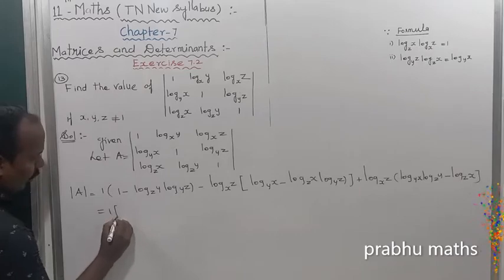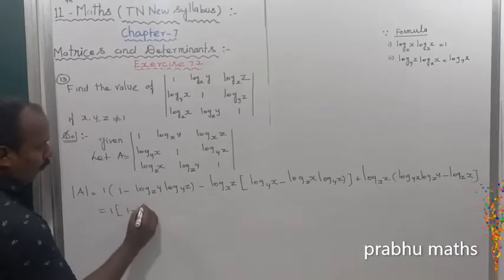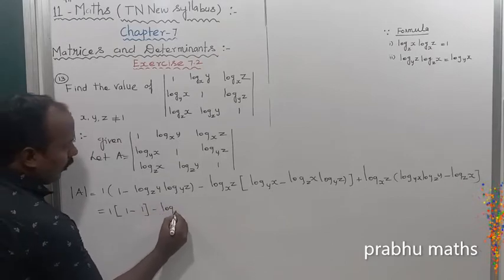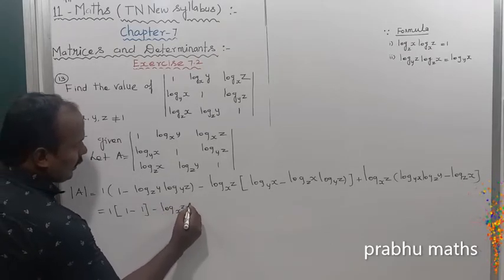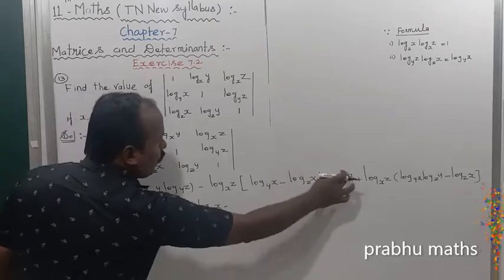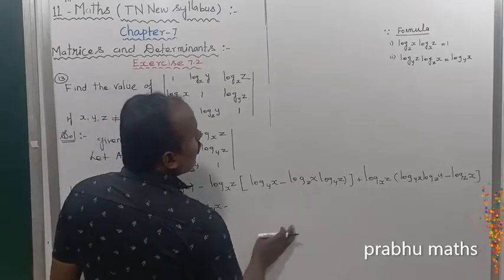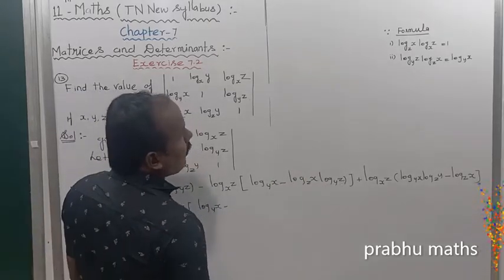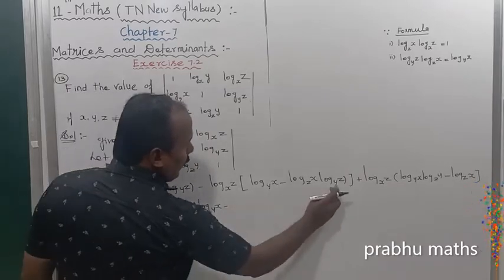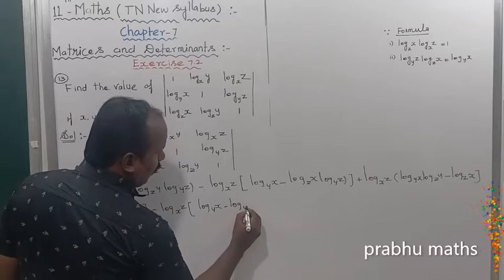That is equal to: 1 into 1 minus — this one is going to be one fully, one only answer. Next, minus log x z into log y x — this one is going to form the base value. Next, this value, that is the value of y. So the base value into x value, so this one log y x.